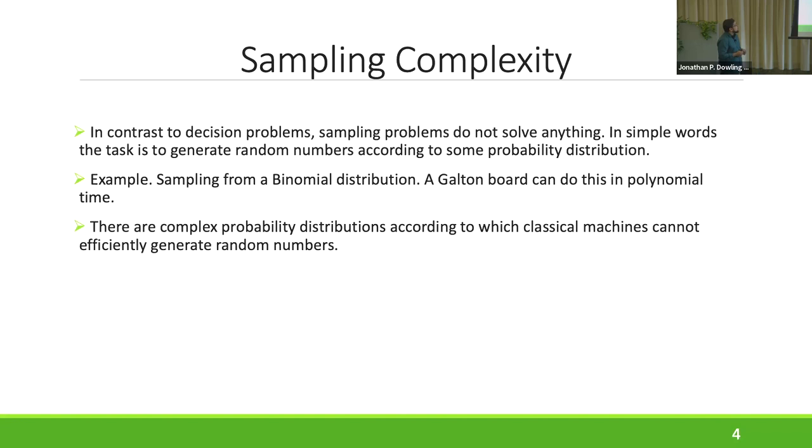We all know about the computational complexity theory, about decision problems or counting problems. But in contrast with all that, the sampling complexity is not about solving some decision problems. It's about how hard is it to sample from a probability distribution. There are examples where, for example, binomial distribution, which you can get by tossing coins or more precisely a Galton board, can do the sampling in polynomial time. But there are some complex probability distributions that classical machines cannot efficiently generate samples from. And that's where this term sampling complexity comes from.